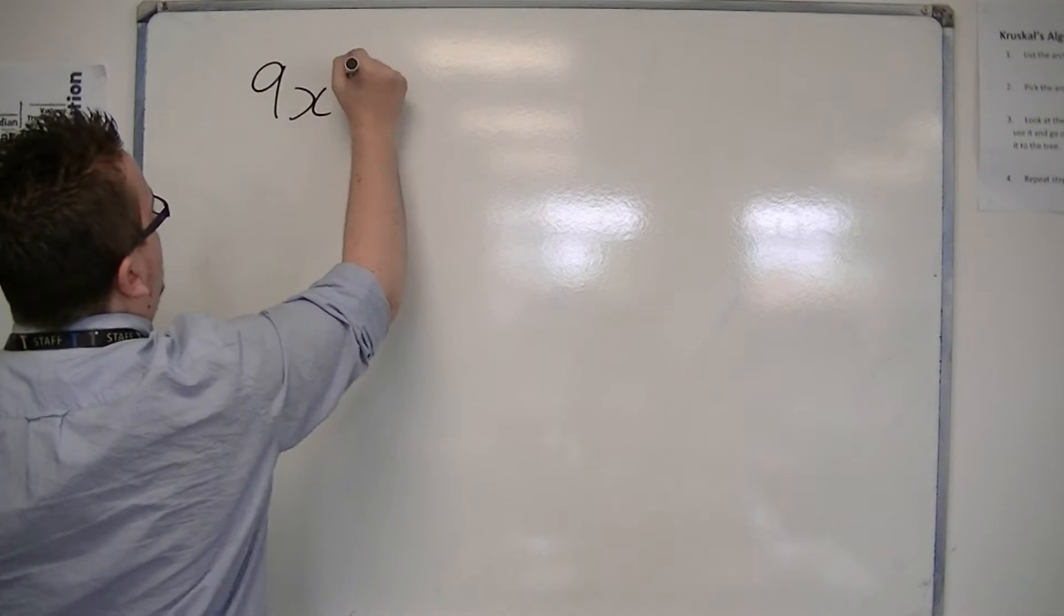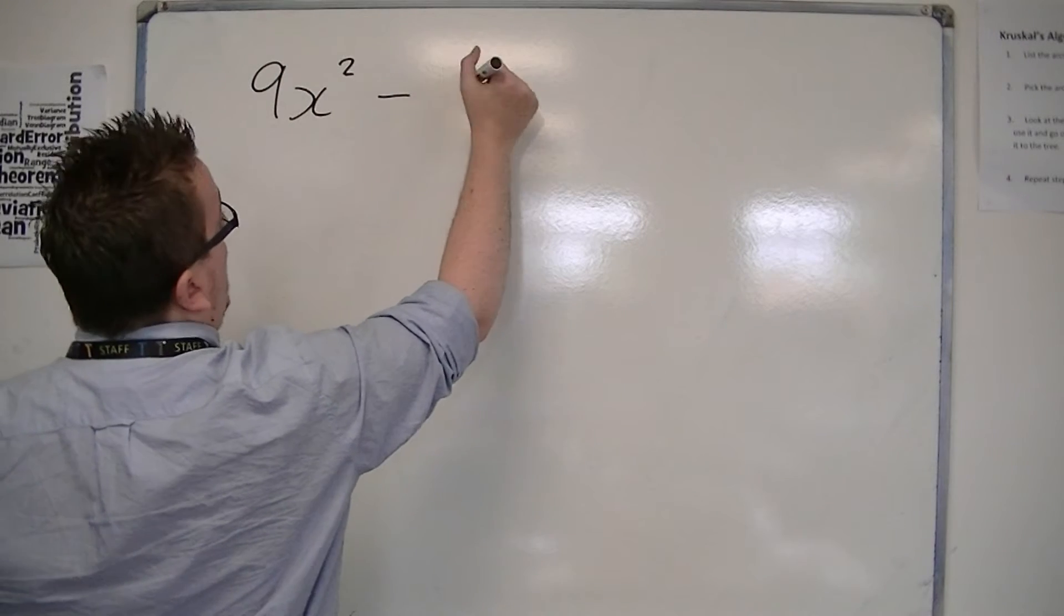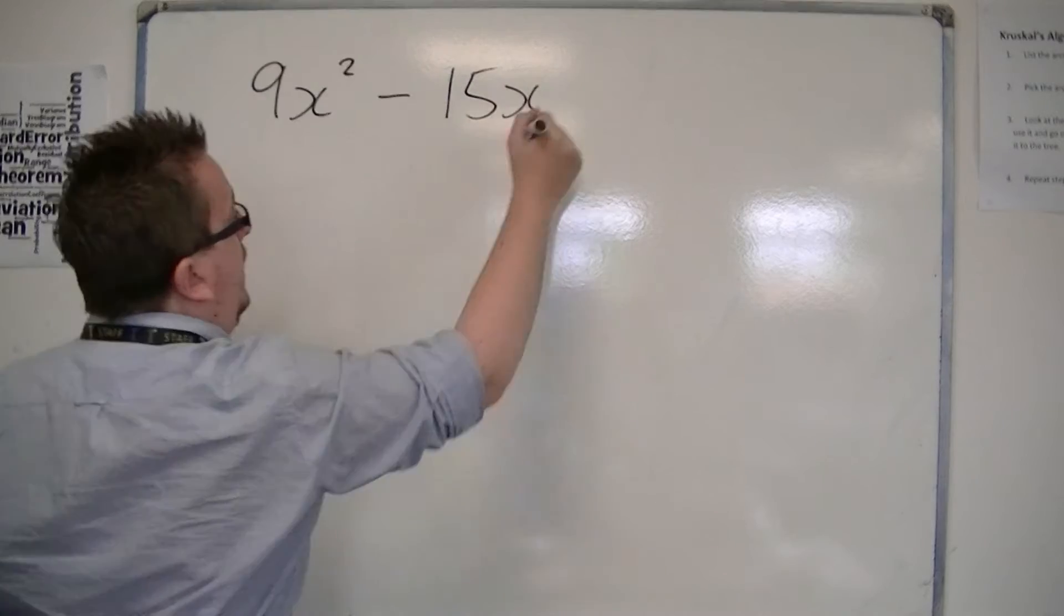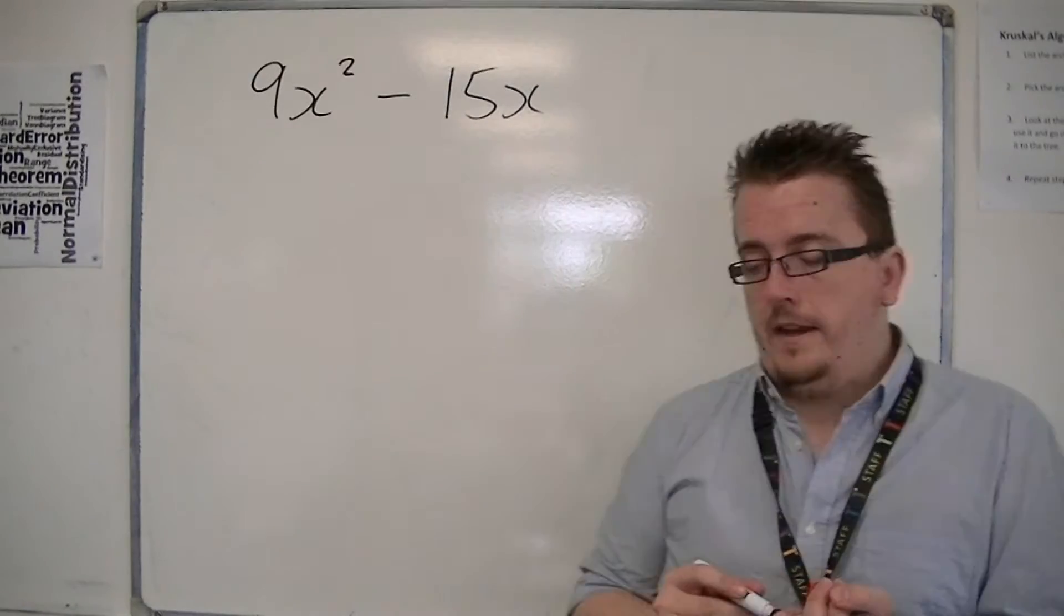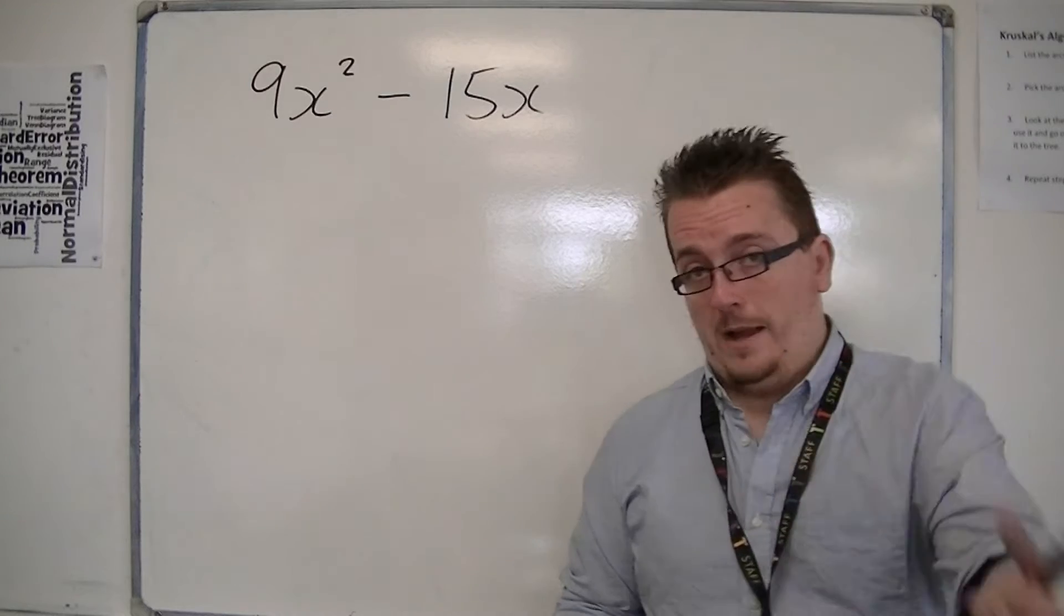For example, if you had 9x squared take away 15x and you were asked to factorise that, then you need to make sure that you are happy with doing that.